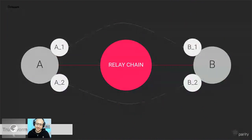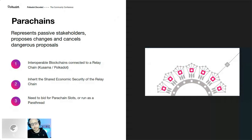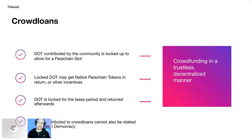Parachains have been called 'trust wormholes' — they are interoperable blockchains connected to a relay chain, either Polkadot or Kusama, sharing economic security. In order to be a parachain, teams need to bid for parachain slots. Parathreads — not fully working yet — are pay-as-you-go blockchains where you get the benefits of interoperability but pay per transaction in DOT or KSM.